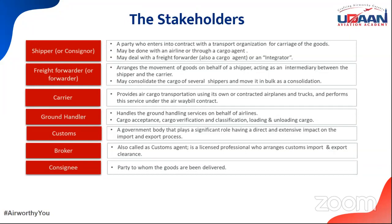An IATA agent is nothing but a freight forwarder approved by IATA. A clearing agent is someone with know-how of all customs rules and regulations who handles clearances from customs. A freight forwarder, IATA agent, and clearing agent could be three different entities or could be one entity. Ideally a freight forwarder and IATA agent are the same, but a freight forwarder may also be a non-IATA agent. IATA is the governing body responsible for putting policies and practices in place for smooth transportation.